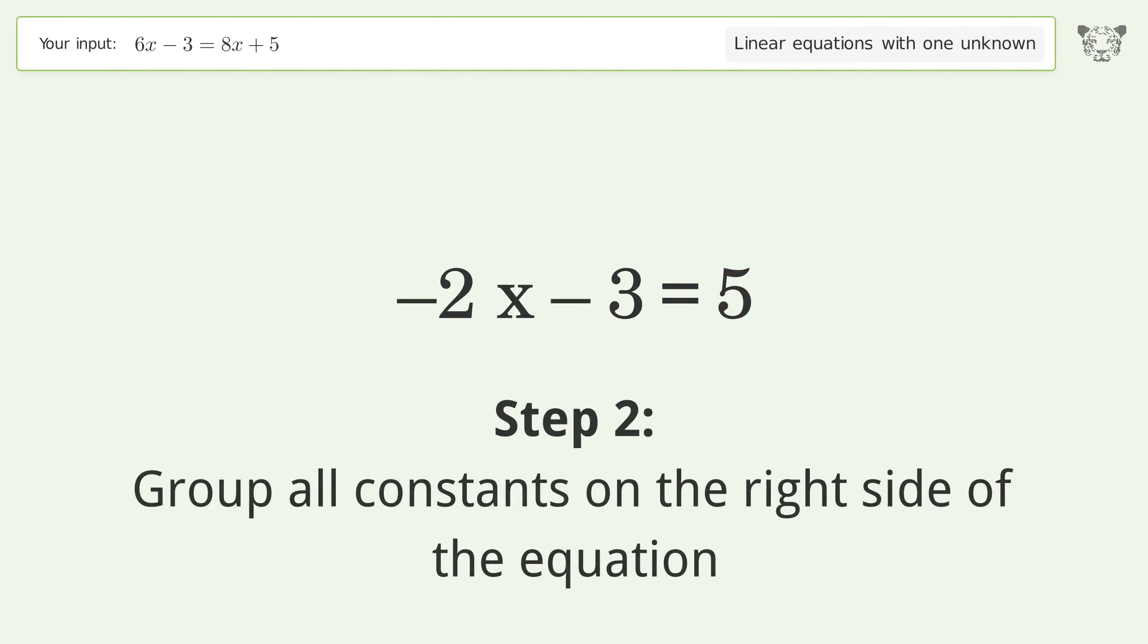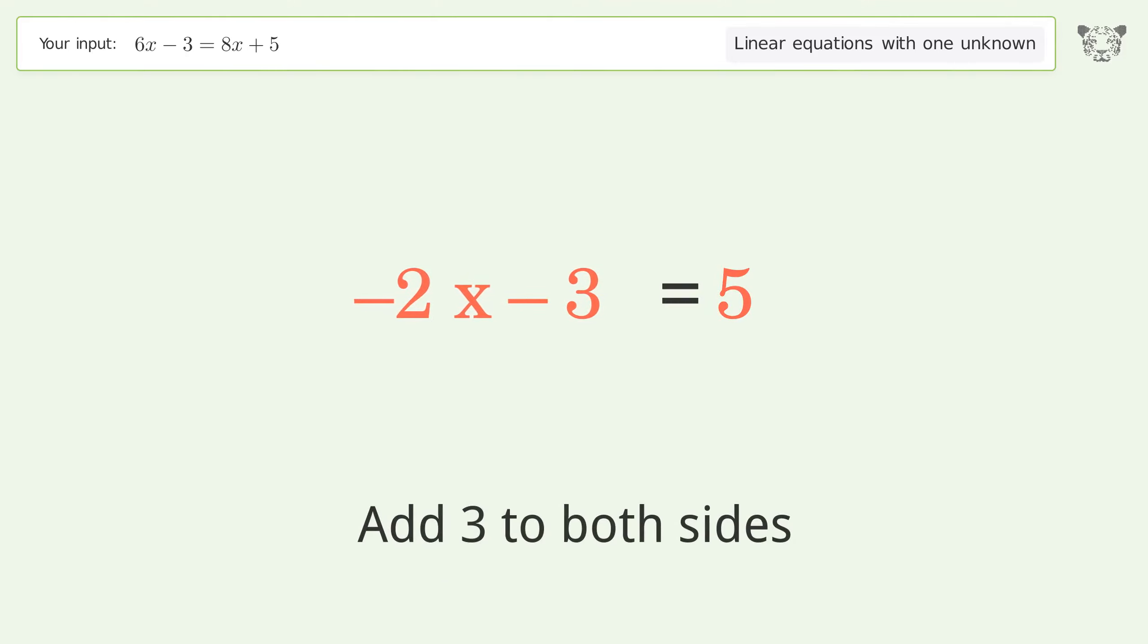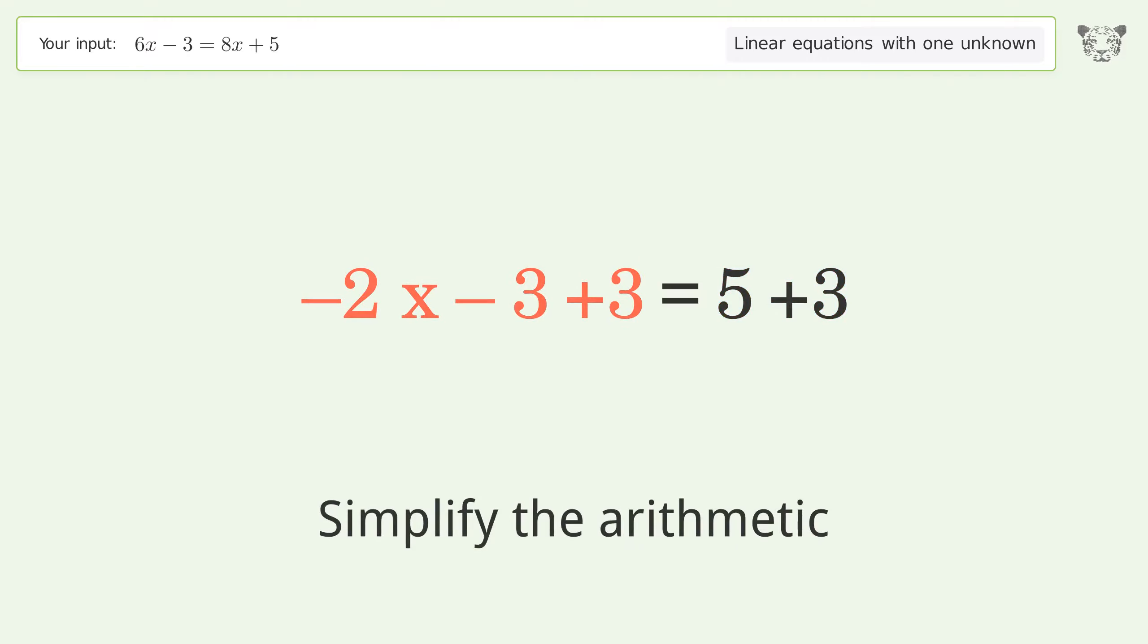Group all constants on the right side of the equation. Add 3 to both sides. Simplify the arithmetic.